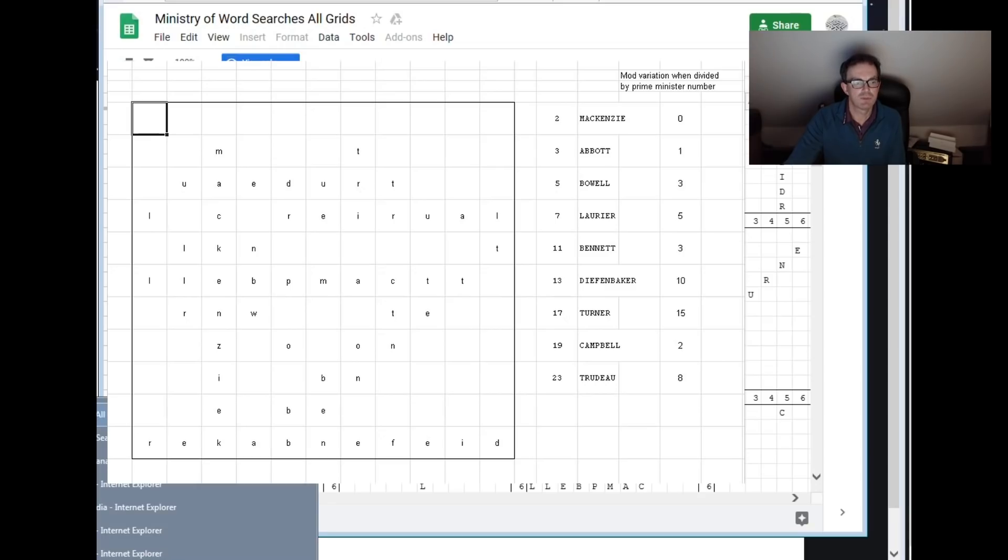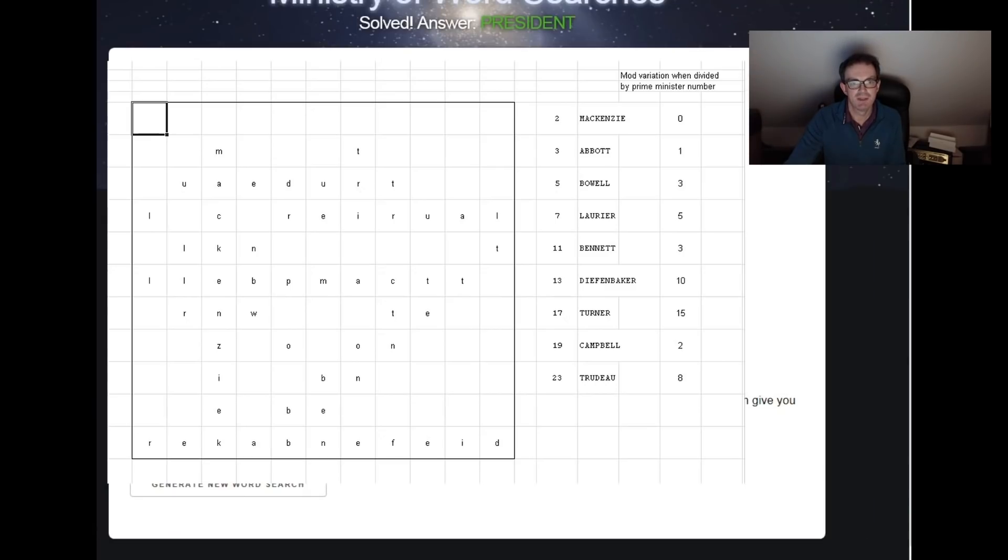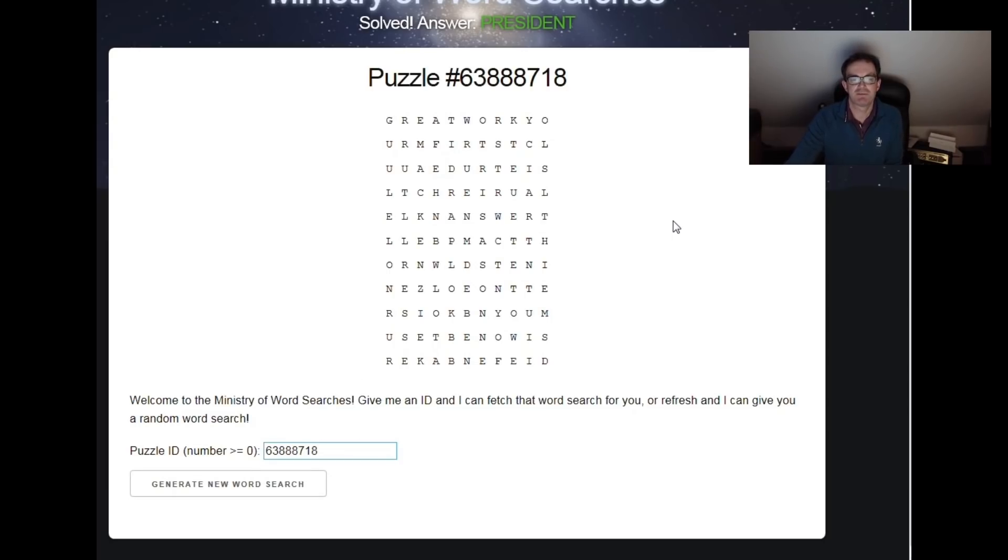And therefore, we had to think about how would we work out what number word search that corresponded to. Well, we needed to use something called the Chinese remainder theorem to do that, which we did, because we're not all absolutely geniuses at number theory. And it turned out that corresponded to this numbered word search, 63,888,718. So we typed it in with bated breath and were presented with this word search. And we thought, oh, this is great, we're going to get the nine-letter answer from this. Well, not quite. It turned out that there was rather a lot more work to do.